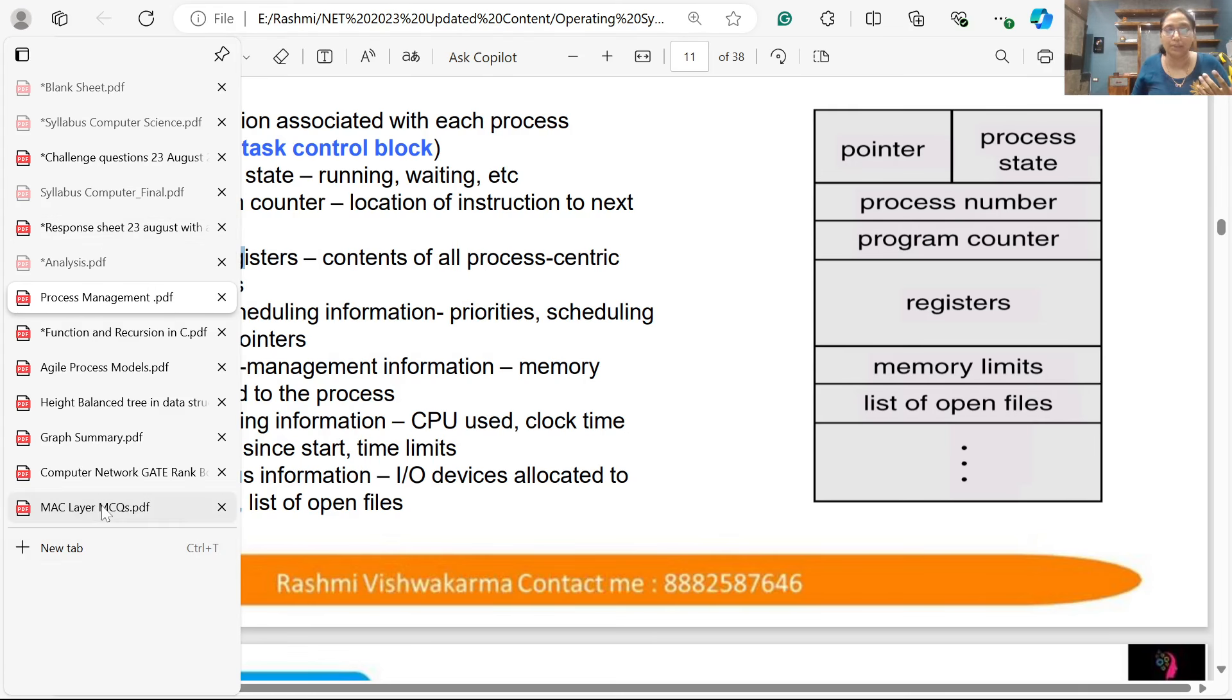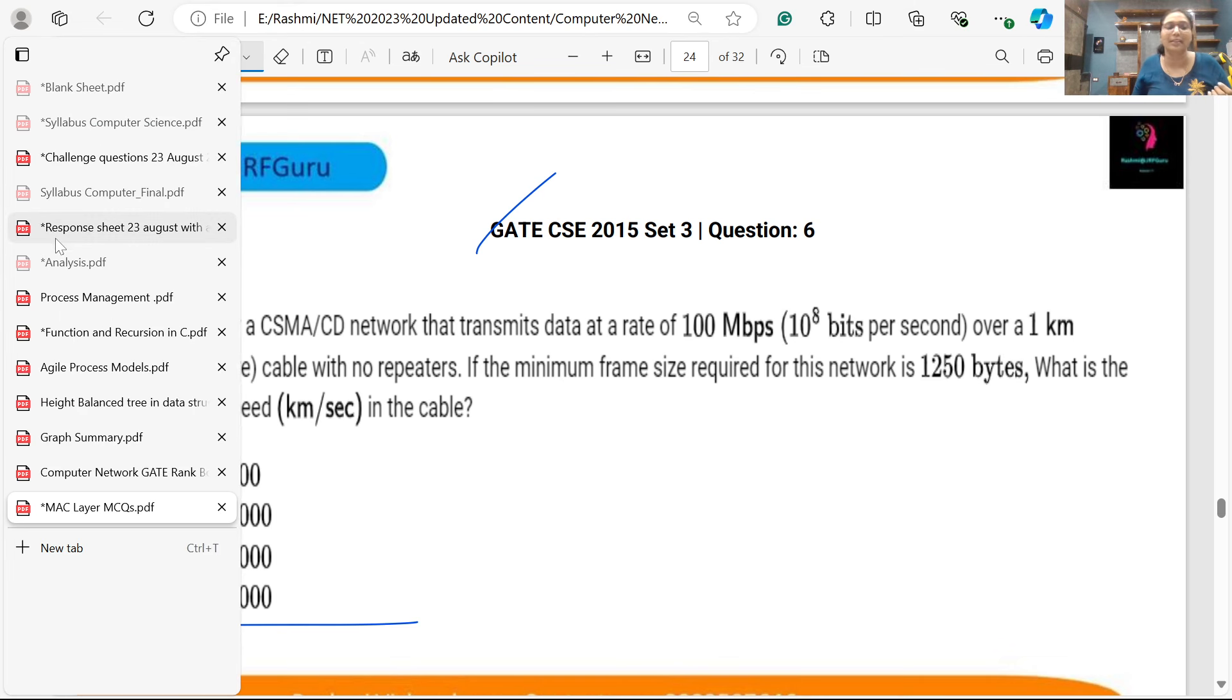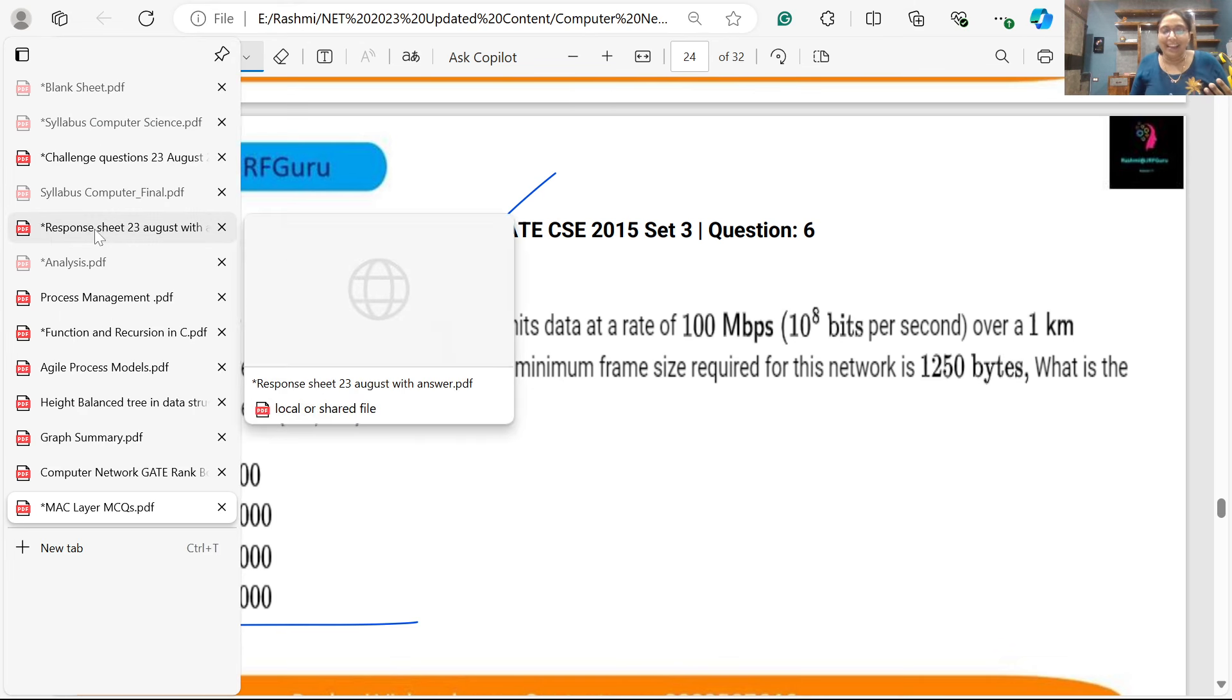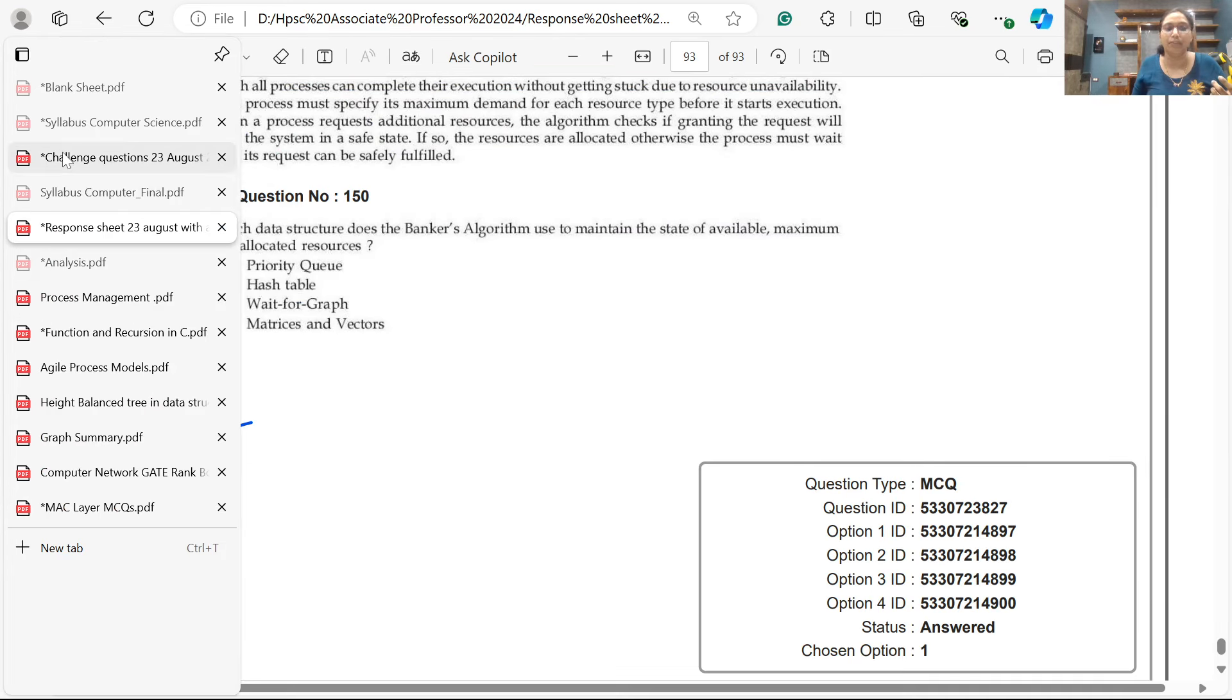One more question directly from GATE 2015 which we practiced in data link layer. Twenty thousand is the answer for that. Also direct questions that are repeated. That's why I think that we have a good score.